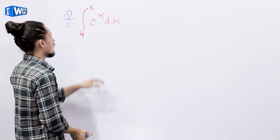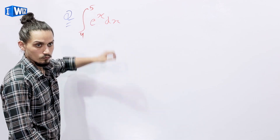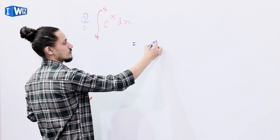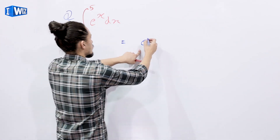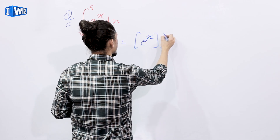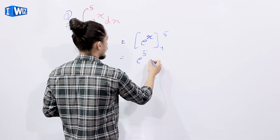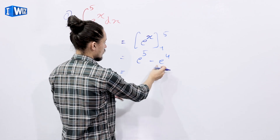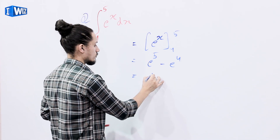Next example: integrate the natural exponential function from the limit 4 to 5. We know the integration of e to the power x dx equals e to the power x. So evaluating from 4 to 5, we get e to the power 5 minus e to the power 4. We can factor out e to the power 4, giving e to the power 4 times (e minus 1), and hence the result.